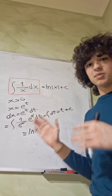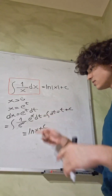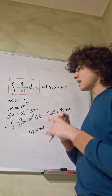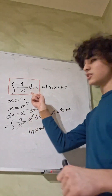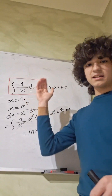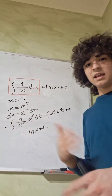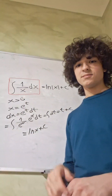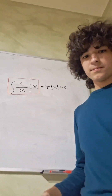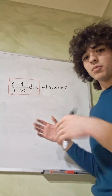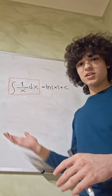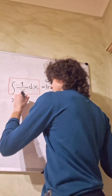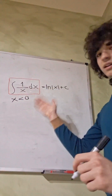This is when x is greater than zero — we know that this integral is the natural log of x plus c. Now we have to consider the case when x is less than zero, because this function is defined for x greater than zero but also for negative numbers, and obviously it is not defined for x equals zero. So let's go ahead and find what this integral is for x less than zero.